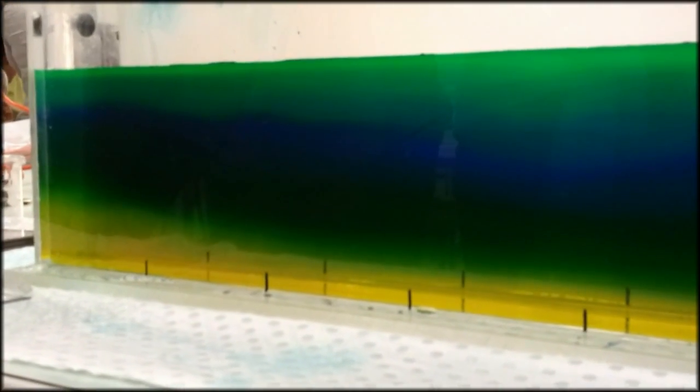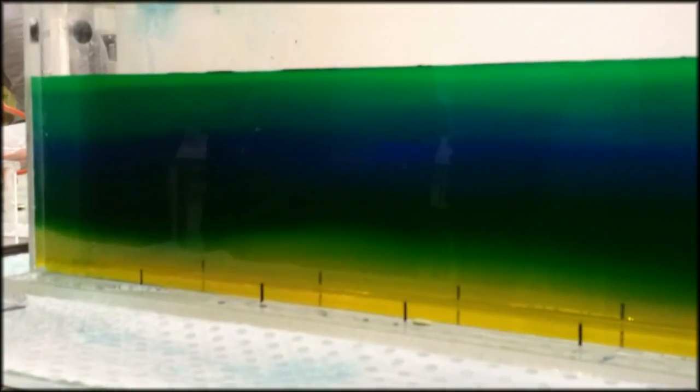So, super saline at the bottom, fresh water at the top, food dye going in to the different density layers.